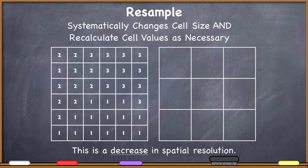Now we come to the resample operation. The resample operation systematically changes cell size and recalculates cell values as necessary. In this case, we're going to be systematically changing the cell size across the entire raster.